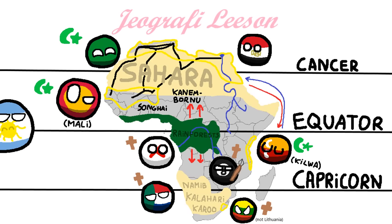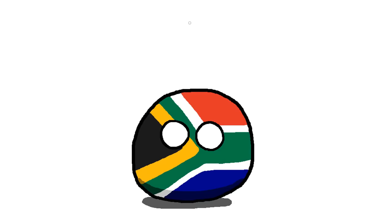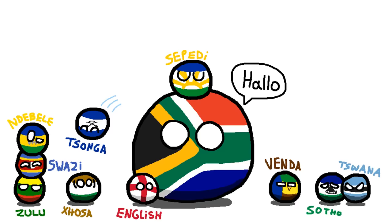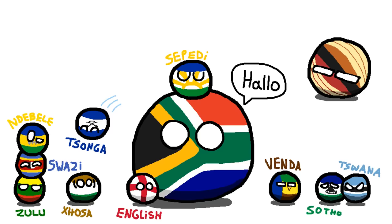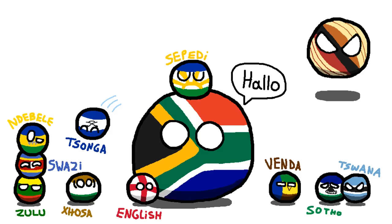These lands would eventually convert to Christianity because of the Europeans, but they mostly kept speaking their Bantu and Niger-Congo languages — besides South Africa, which kept speaking Afrikaans and also has 10 other official languages. Oh my god!